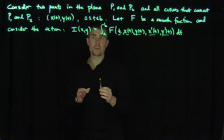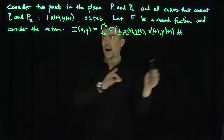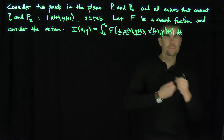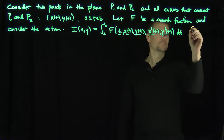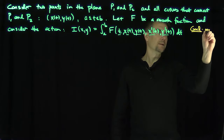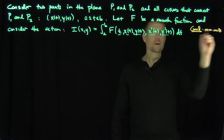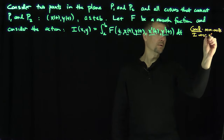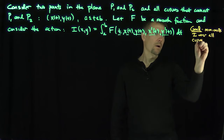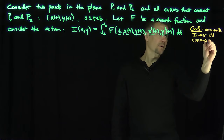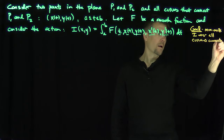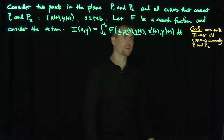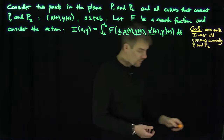My goal is to minimize this functional, this action functional I. So our goal in the Euler problem is to minimize this functional I over all smooth curves connecting p1 and p2.